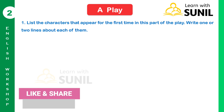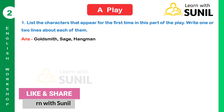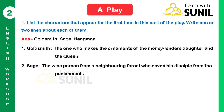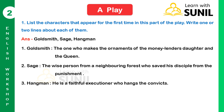English workshop, first question: List the characters that appear for the first time in this part of the play and write one or two lines about each. Answer: Goldsmith, Sage, and Hangman. First, the goldsmith — the one who makes the ornament for the moneylender's daughter and the queen. Second, the sage — the wise person from a neighboring forest who saved his disciple from punishment. Third, the hangman — a faithful executioner who hangs the convicts.